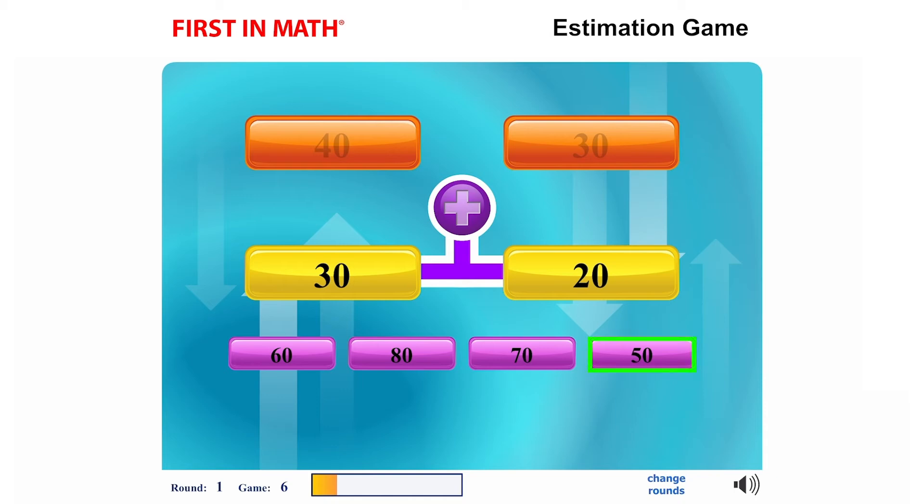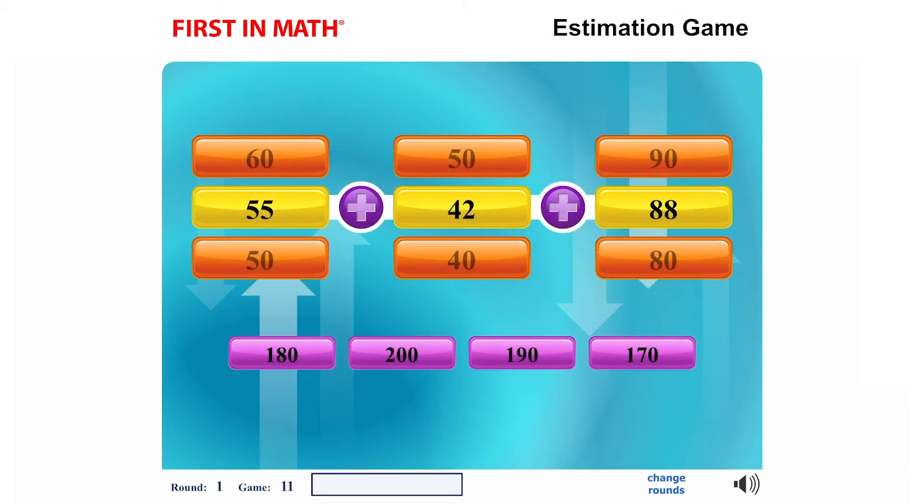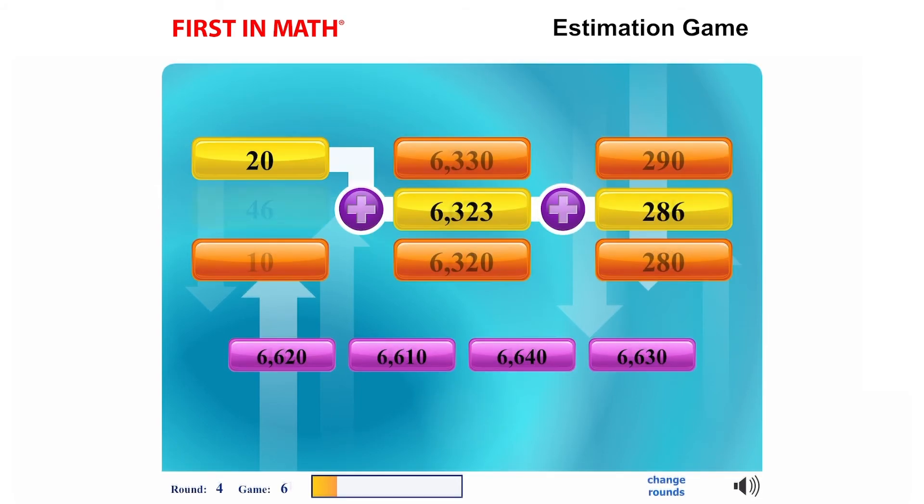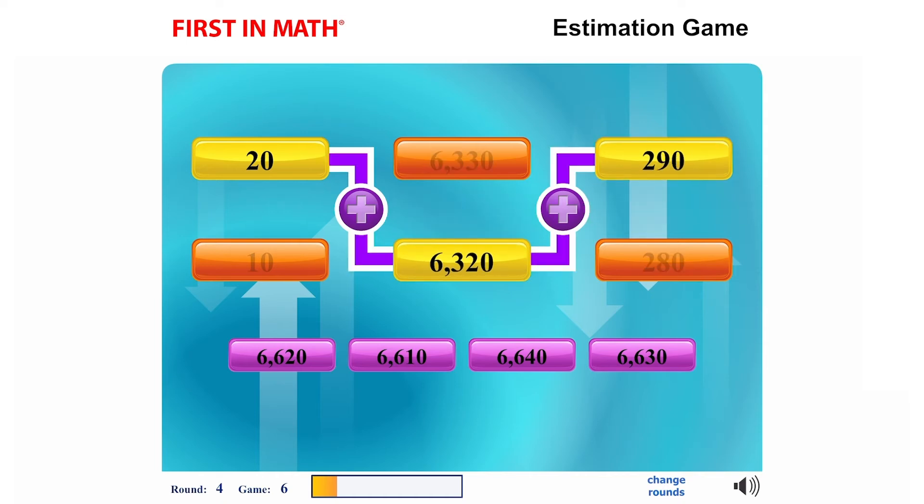If you can get through those, games eleven to fifteen will show three numbers that you'll need to add together to find the estimated total. As you advance in games and rounds, the games get a bit more challenging.